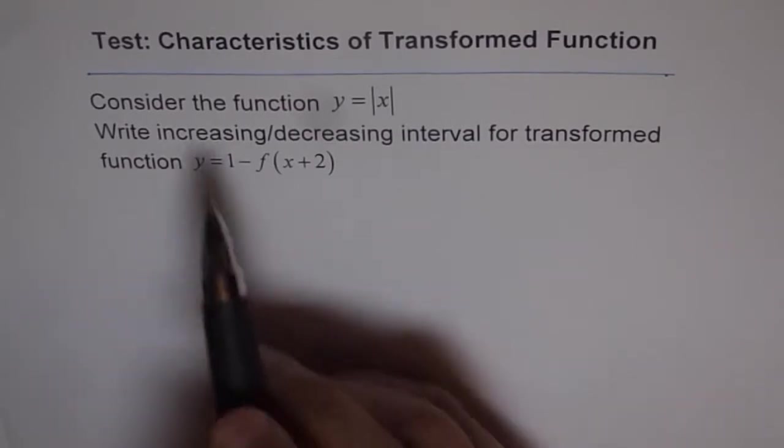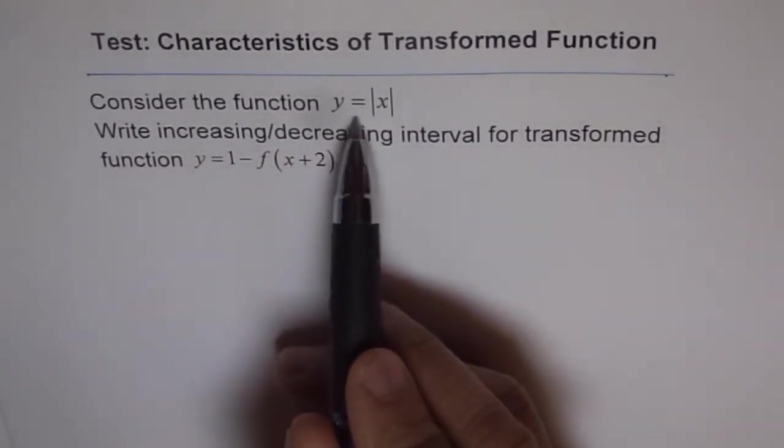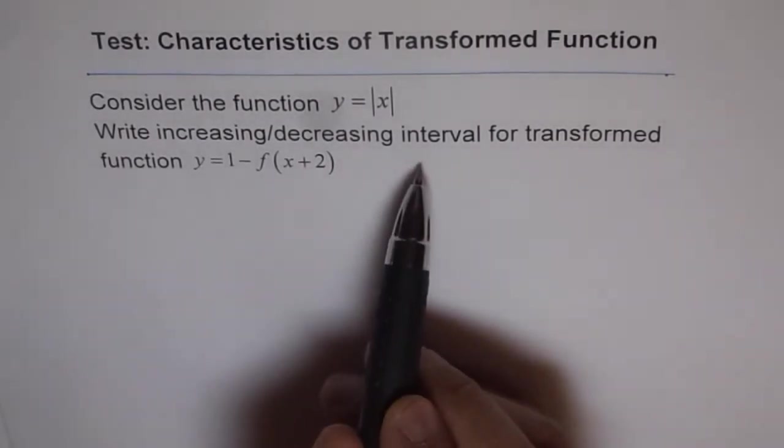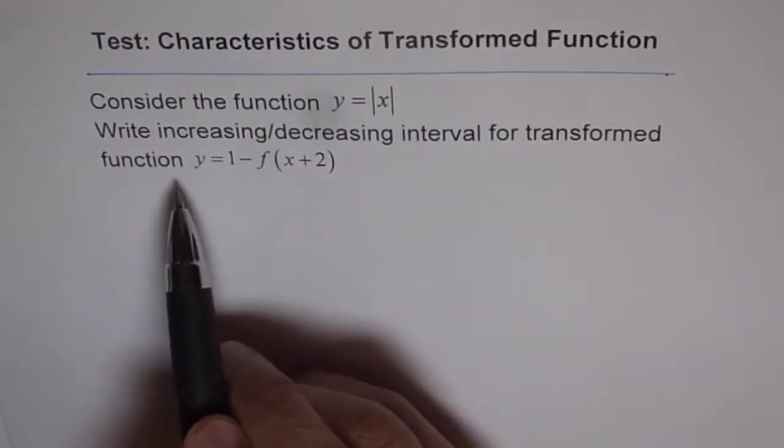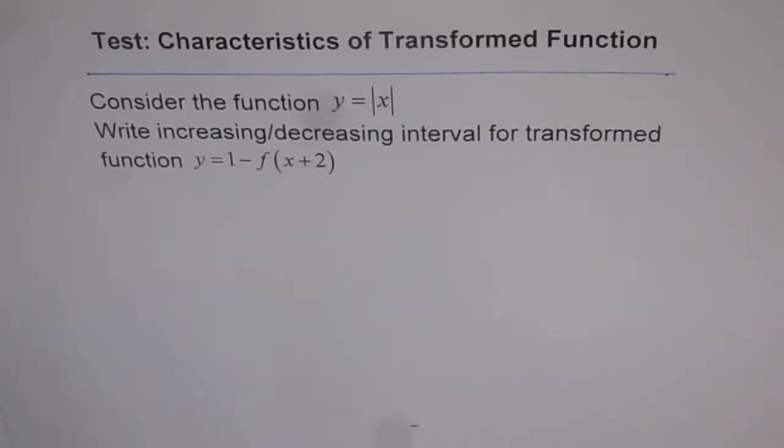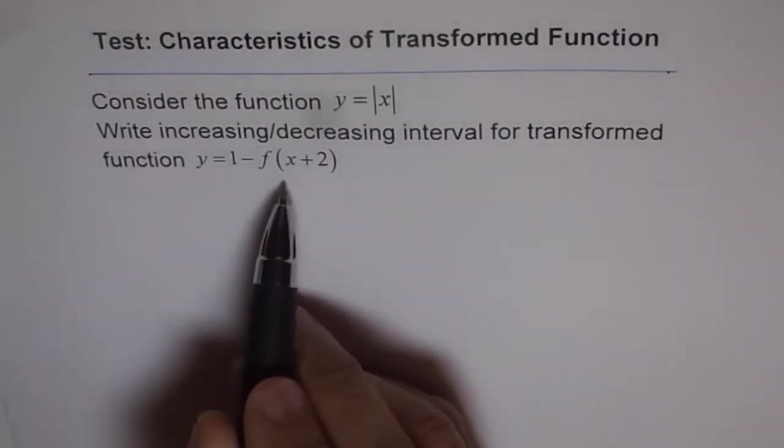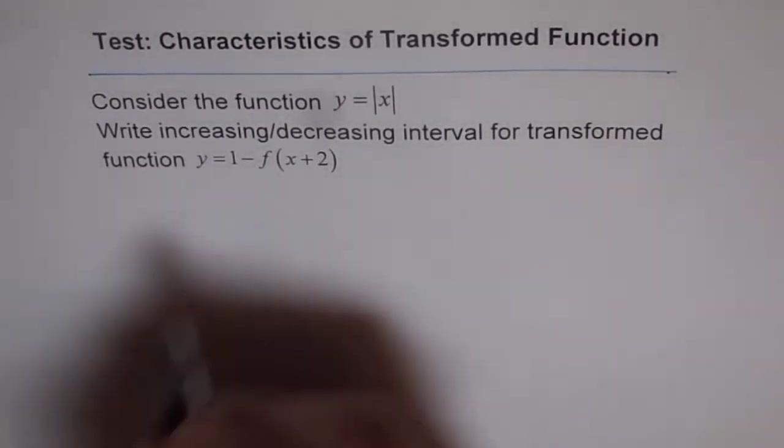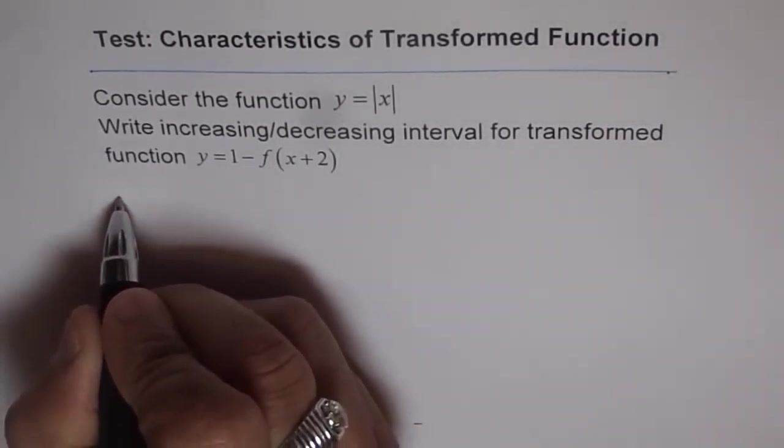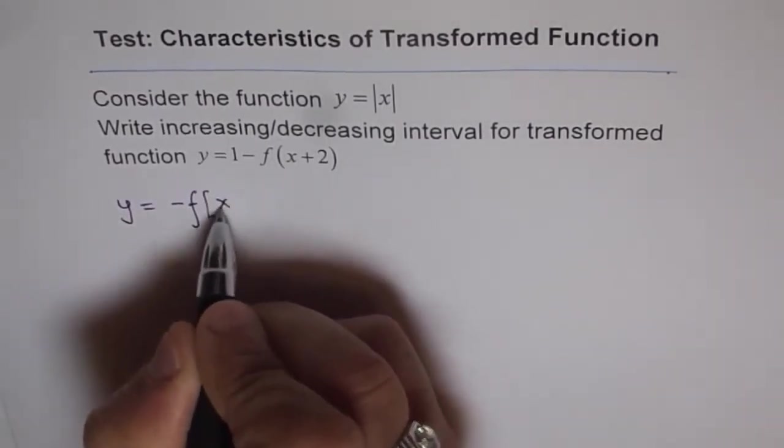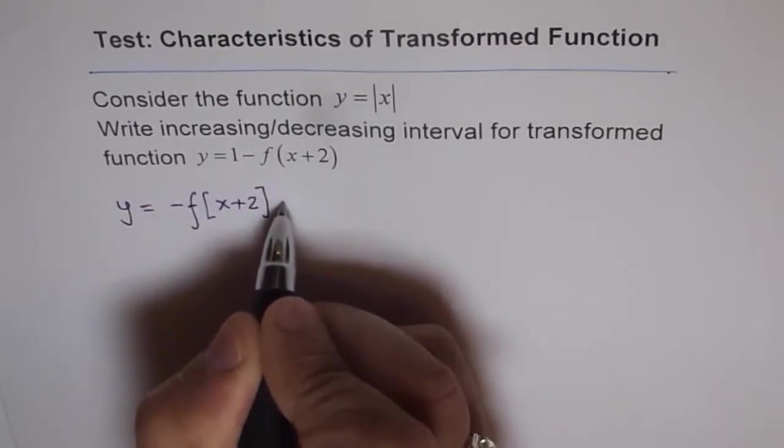So this one is, consider the function y equals absolute x. Write increasing/decreasing interval for transformed function y equals 1 minus f of x plus 2. Now as I have always said, when you have a function like this, it is a good idea to rewrite it in a way which you are familiar, which is,